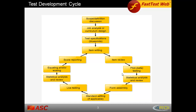Review items, which can have several levels of review. Pilot the items, have the items go through statistical review and analysis, create a test form assembly. Results for the standard setting can be recorded for each item and test. Have live testing through either secure online delivery or paper-based. Answers from paper-based exams can be imported back into FastTestWeb for statistical review.